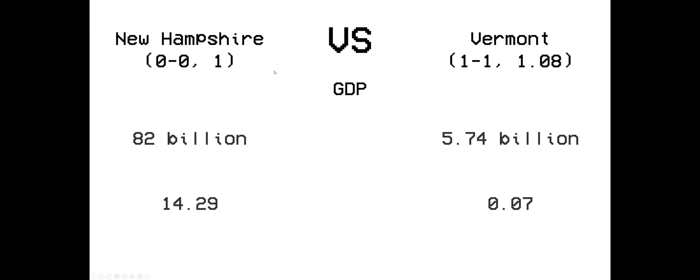The criterion is GDP. And Vermont — oh no! 14.29! Oh no! Vermont just getting blown out! What the heck?